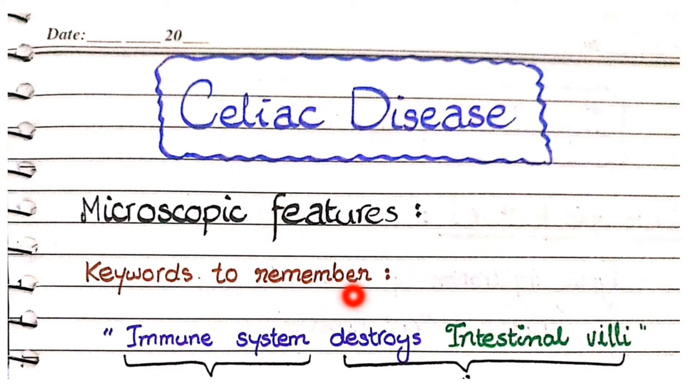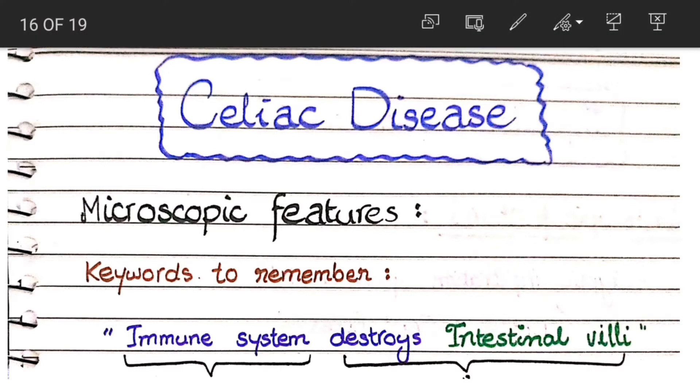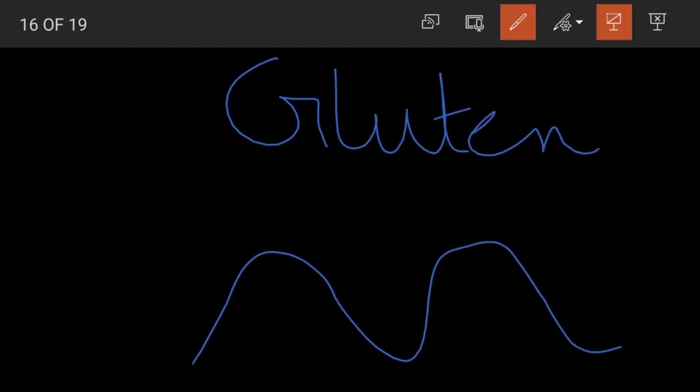For example, in celiac disease our immune system is activated against a dietary protein gluten or some of its products. When this gluten or some of its products are absorbed by the intestinal epithelial cells lining the villi of small intestine, our immune system that is activated against such products starts to destroy the epithelial cells of villi.